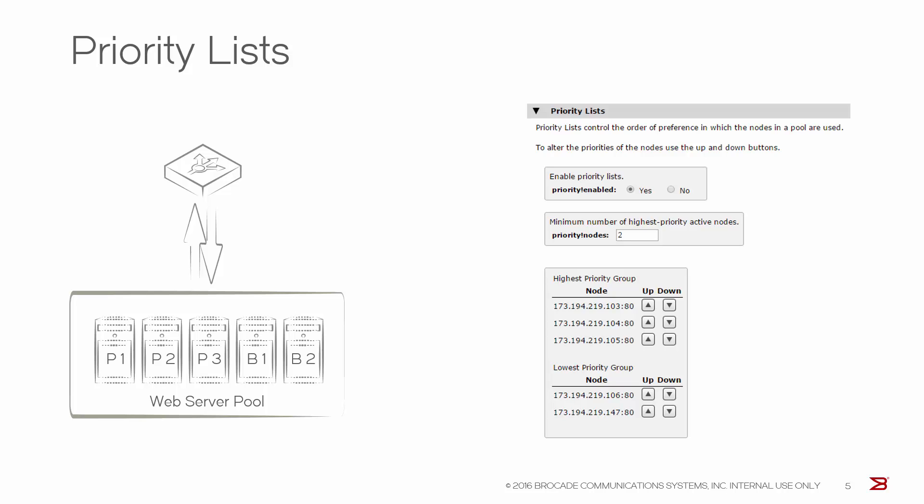In this example, you have three servers that you want to use for normal traffic — primary one through three — and you also have two off-site servers, backup one and two. The two backup servers could be set up as a failure pool for the three primary servers, but a failure pool is only used if every node in the primary pool fails. If both primary one and three were to fail, only two would receive traffic, and then only one server would be available.